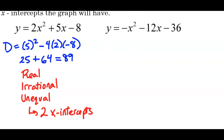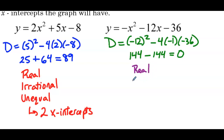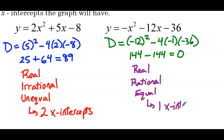For the last function, y = −x² − 12x − 36: the discriminant is (−12)² − 4(−1)(−36) = 144 − 144 = 0. Since the discriminant is 0, the roots are real, rational, and equal. If we factor this we would get the same solution twice, and since the roots are equal, there is only one x-intercept.